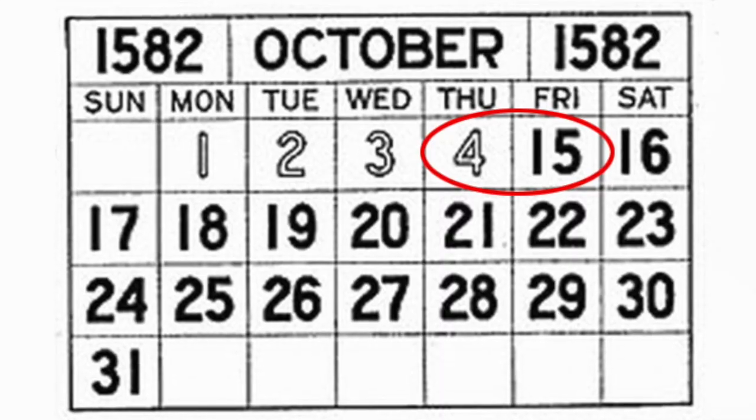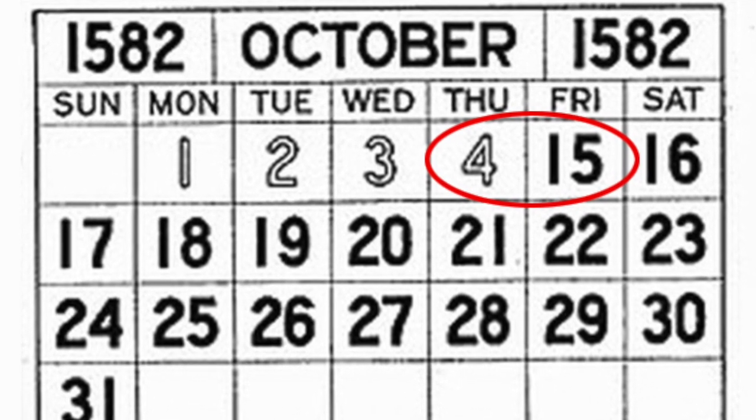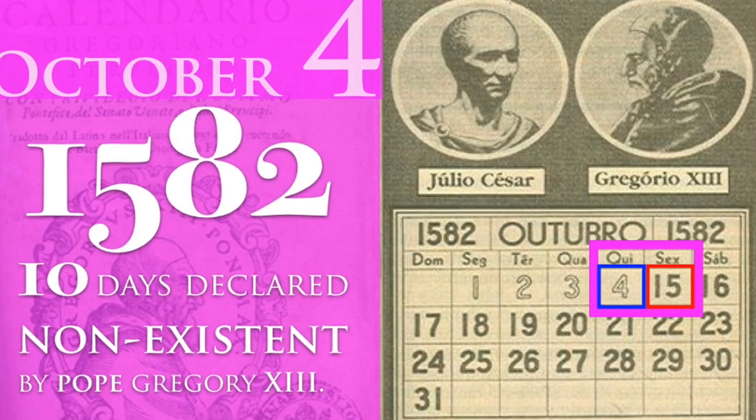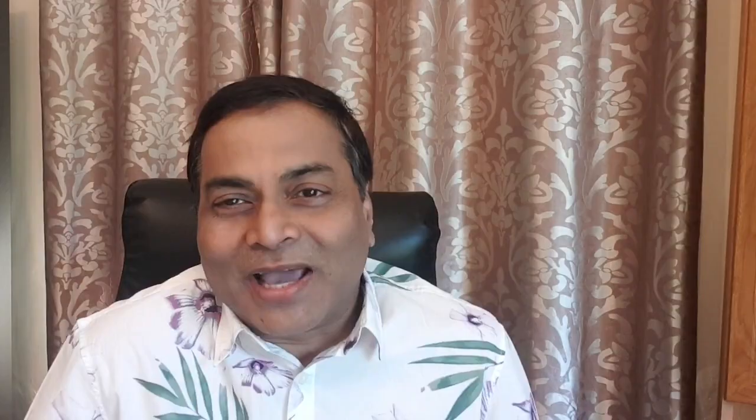Earlier, when Europe adopted the Gregorian calendar, about 10 odd days had to be chopped off, and that was in 1582. The very basis of the Gregorian calendar is the Julian calendar. The Julian calendar once had a year that lasted 445 days — and that was in 49 BC. This is how these calendars have been evolving.